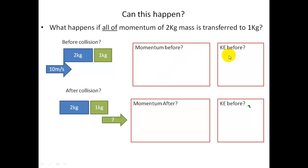And once you have calculated what the final velocity is, if it is all transferred to the one kilogram mass, find out what happens to the kinetic energy before and after. When you go through and do the working, you will find out that it ends up with more kinetic energy afterwards than it starts with. This is not possible.